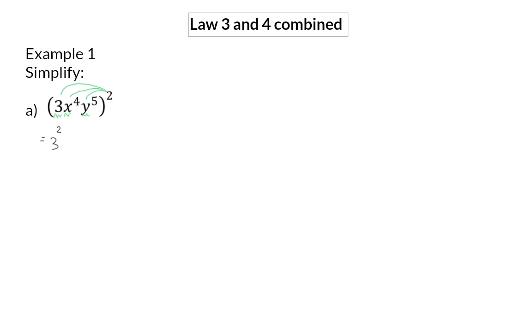When it comes to the variables, we will also use exponential law number 3. Because we already have an exponent that is now raised to a second exponent, we will multiply these exponents to get x to the power of 8. And similarly for y, we will say 5 times 2 is 10. And now we can go one step further, because 3 squared is 9, x to the power of 8, y to the power of 10.